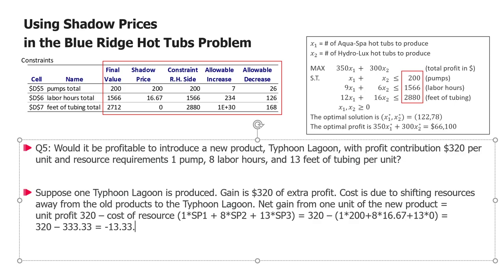So what does this tell us? What is the usefulness of this? Well, the usefulness of this is that we have just determined that it is not profitable to produce a Typhoon Lagoon, because the gain will be $320, but taking resources from AquaSpa and HydroLux will cost us a loss of profit of $333. So the net effect will be actually a loss in profit, and therefore we know if we were to add a third product here and resolve this third product, the Typhoon Lagoon, with the parameters as defined in this text, we would not be producing, so the optimal solution would be still 122.78, and then the third product variable optimal value would be zero.